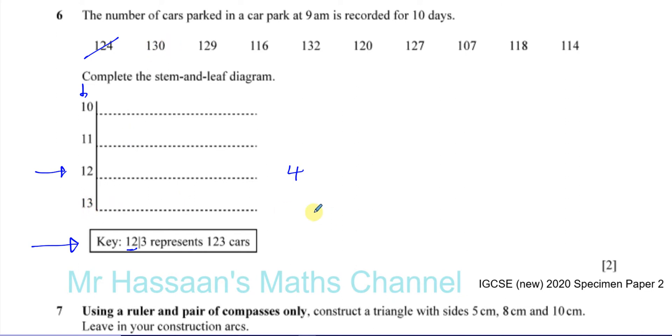130, so that's going to be here, it's going to be a 0, so I'll cross that out. 129, that's going to be in this column as well, that's going to be in the 120s column, cross that out. 116, that's going to be in this column, which is the 110s, so I'm going to put a 6 here. 132, that's going to be in this column, so I'll put a 3 there. 120, it's going to be in this column, so I'll put a 0 there. 127, 7 here.